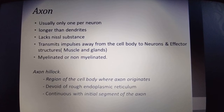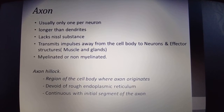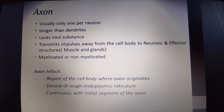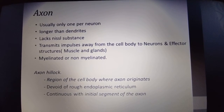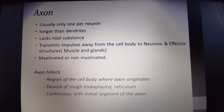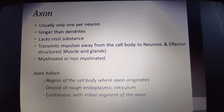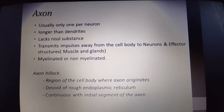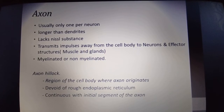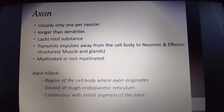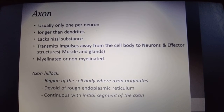The axon hillock is the region of the cell body where the axon originates. There is no rough endoplasmic reticulum here, and it continues with the initial segment of the axon.